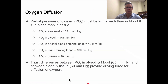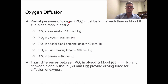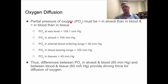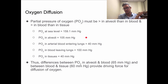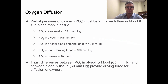To summarize: because we have a pressure difference between the air, the alveoli, the blood, and the tissues, we get a downward gradient flow of oxygen moving passively through each stage.